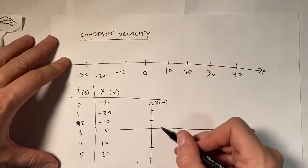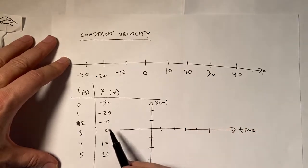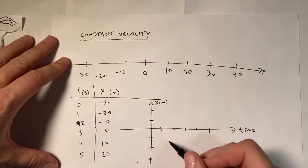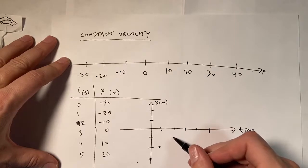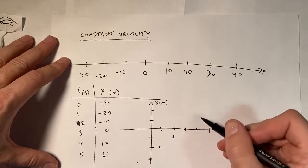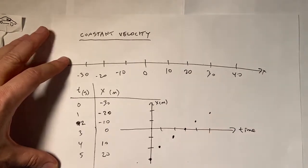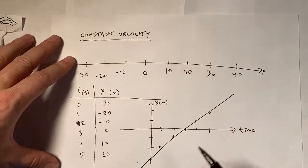And then this will be one, two, three, four, five. So we can actually put these data points on here. So I'll start right here. And the next one, I'm at one second at negative 20. And then I'm at two seconds at negative 10. And then I'm at three seconds at zero. Okay. And you see, it makes a nice straight line. So right there.